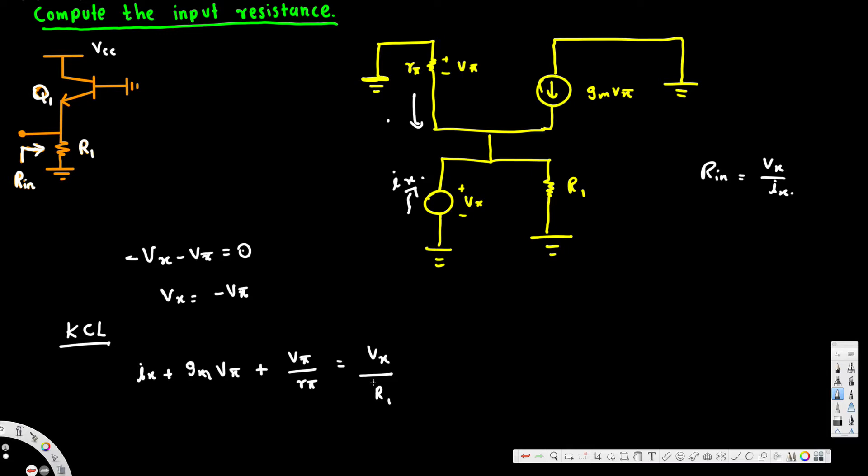...plus v_phi over r_phi, that's equivalent to v_x over r1. Now if we replace all the v_phi with v_x (because we want to have v_x over i_x to calculate r_input), this is going to be: i_x + gm*(-v_x) + (-v_x)/r_phi = v_x/r1.